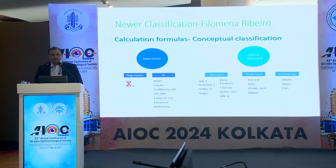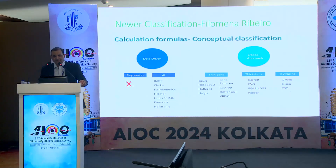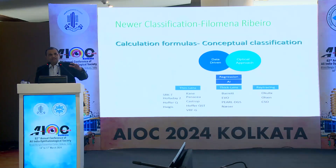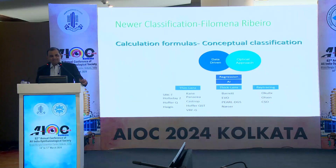For the optical approach using ray tracing optics, it can be Aculex, Olsen, or CSO. This is how it has been classified, but even that classification is imperfect because there is intermingling. So actually the classification should be thin lens, thick lens, and ray tracing, each either with regression incorporation or AI incorporation — but even this does not classify properly.